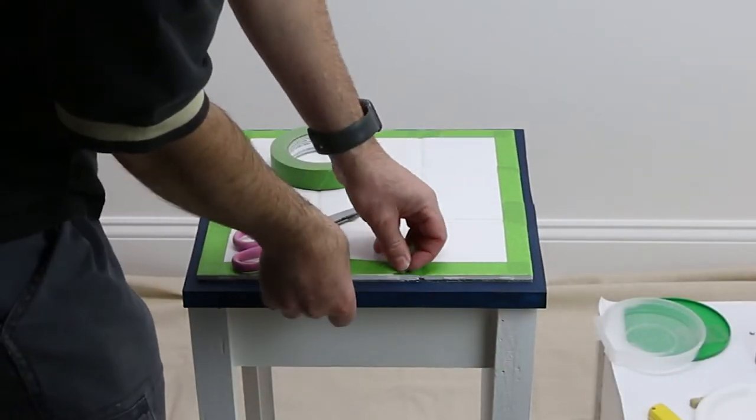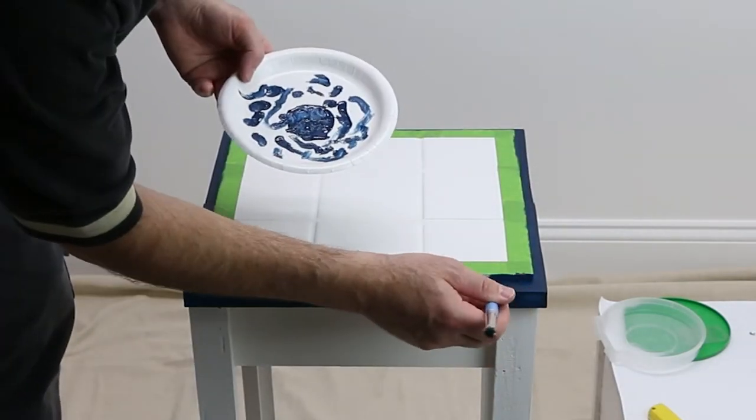Once the grout has dried, mask and paint the edge of the tiles using the same paint as the table top.